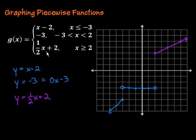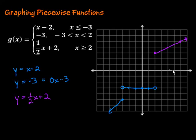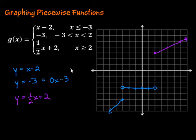So to summarize graphing piecewise functions: the keys are to look at each individual expression and treat it as an equation — graph that equation. Then look at the inequalities to see which portions you want. For example, x less than or equal to negative 3 means we use the x-axis, find x equals negative 3, and take the line going that way. The middle section from negative 3 to 2 has open circles at both ends, and the last piece has a filled-in circle going to the right. I hope this video was helpful. Keep working hard on your graphing piecewise functions — you can do it!